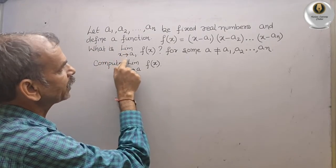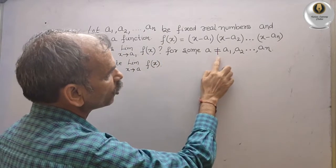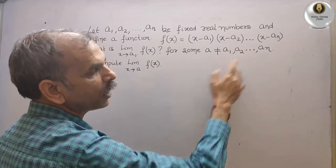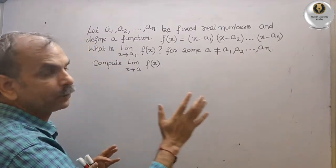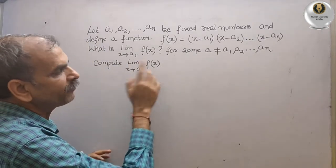What is the limit x tends to a1 of f(x)? For some a is not equal to a1, a2, up to a9, compute limit x tends to a of f(x).